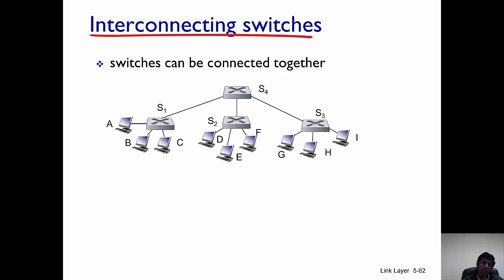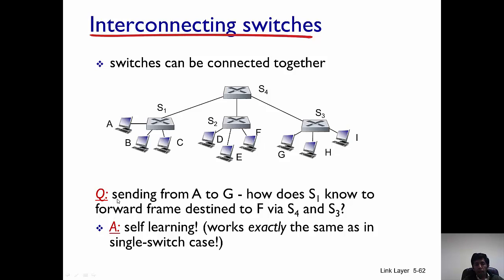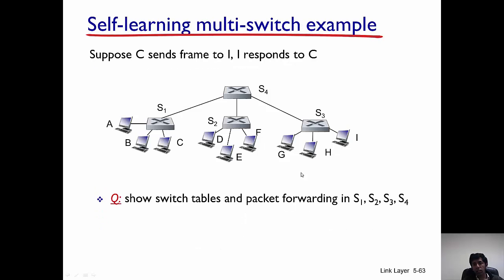It's also clear that switches can be connected together. Switches can be connected together in this form and they can form a hierarchy. It is actually true that institutions connect switches in this network. So there's a question for you: if this host here wants to send some frame to this host G here, the question is how does switch S1 know it has to forward the datagram to switch S4 and then to switch S3. The answer is that switches are self-learning, so similar to what we discussed in the previous slide, you could populate the switching tables at S1, S2, S3, S4 such that the frame from A passes to S1, S4 and S3 and finally reaches G.